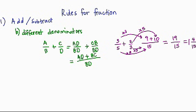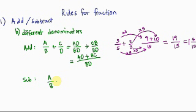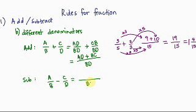In the same manner, for subtraction with different denominators: if you have A over B minus C over D, find the least common denominator, which is B times D. So the result is A times D minus C times B, all over B times D.